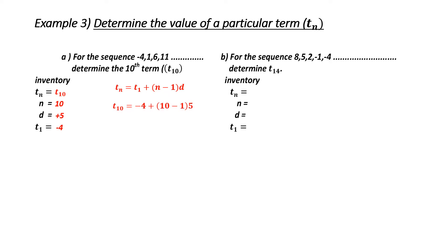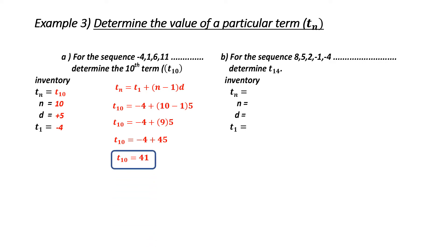T to the 10 is what I'm looking for. T to the 1 is negative 4, n is 10, and D is 5. I follow BEDMAS: first I do the brackets — 10 minus 1 gives me 9. Then I multiply: 9 times 5 is 45. Finally, I add: negative 4 plus 45 is 41. So the 10th term in my sequence is 41.